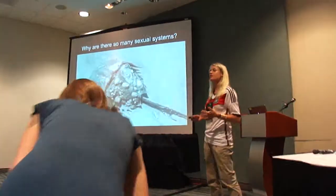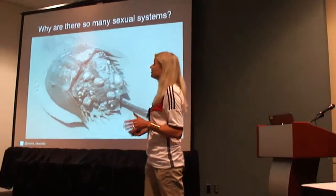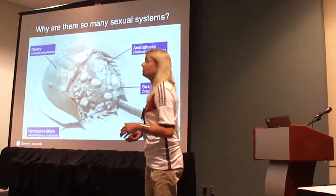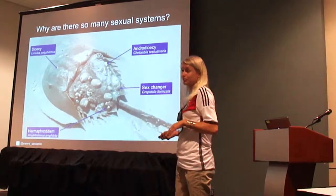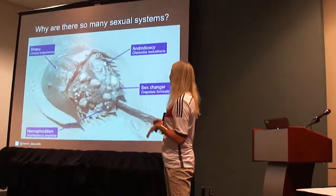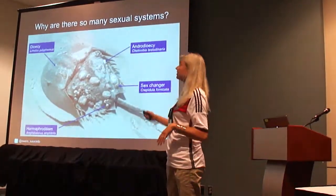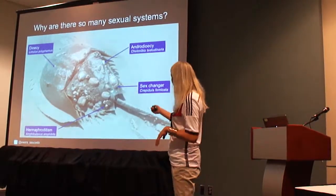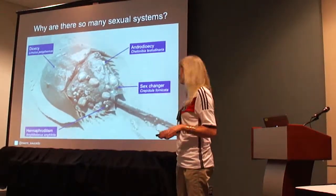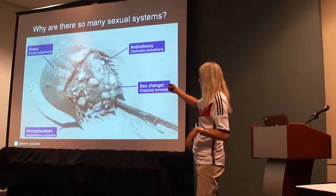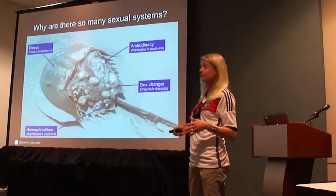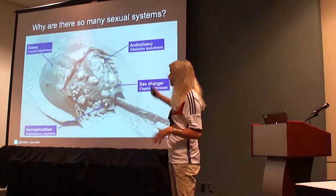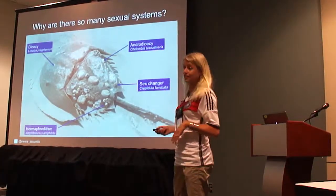One of the questions that drives me is: why are there so many sexual systems? In this picture alone, there are four different sexual systems. The Russian thread itself — that's the big thing in the picture — is dioecious, which means there are males and females. One of the barnacle species is hermaphroditic. The limpets are actually sex-changers or sequential hermaphrodites. And the other barnacle species, my study organism, is androdioecious.